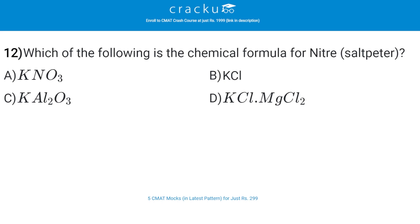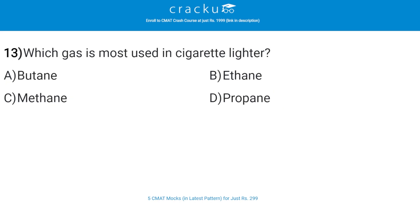Which of the following is the chemical formula for nitre, also known as saltpeter? The correct answer is A — KNO₃. Potassium nitrate, also called saltpeter or nitre, is a white solid soluble in water, formed by fractional crystallization of sodium nitrate and potassium chloride solution. It occurs naturally in rocks in India, South Africa, and Brazil.